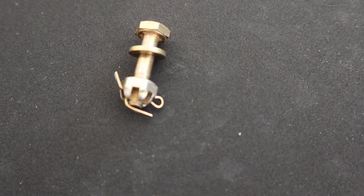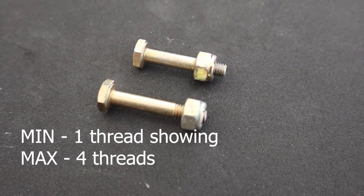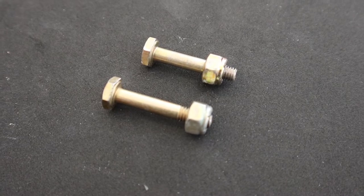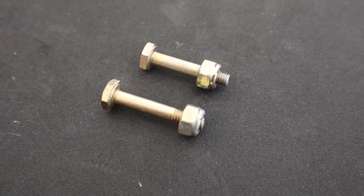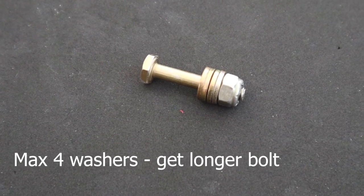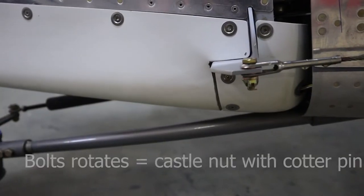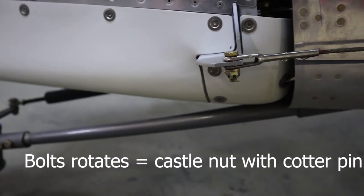So here's what the castle nut looks like when it's installed. A couple other things we'll talk about is when these are installed, you have to at least see one thread coming out, and a max of 4 threads so that you know that the nut is not tightened all the way down to the grip portion of the bolt. And also you can have max 4 washers, so if you end up having that, you need to change the size of the bolt.